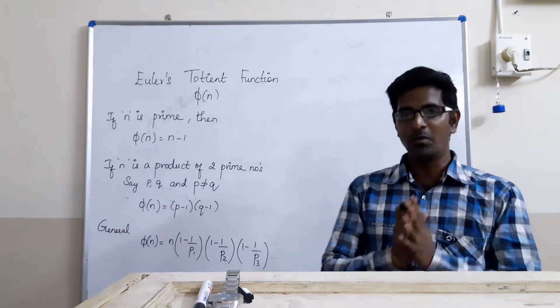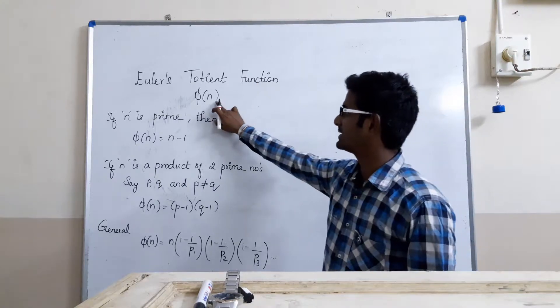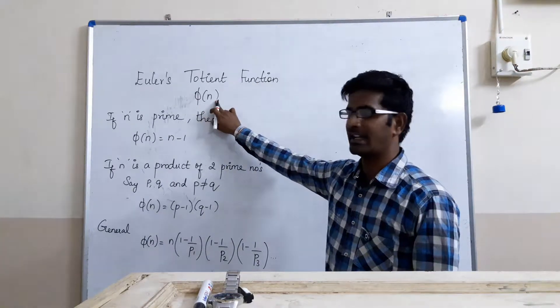Hello everyone, now we shall move to Euler's Totient function which is also called as phi function, represented as phi of n.